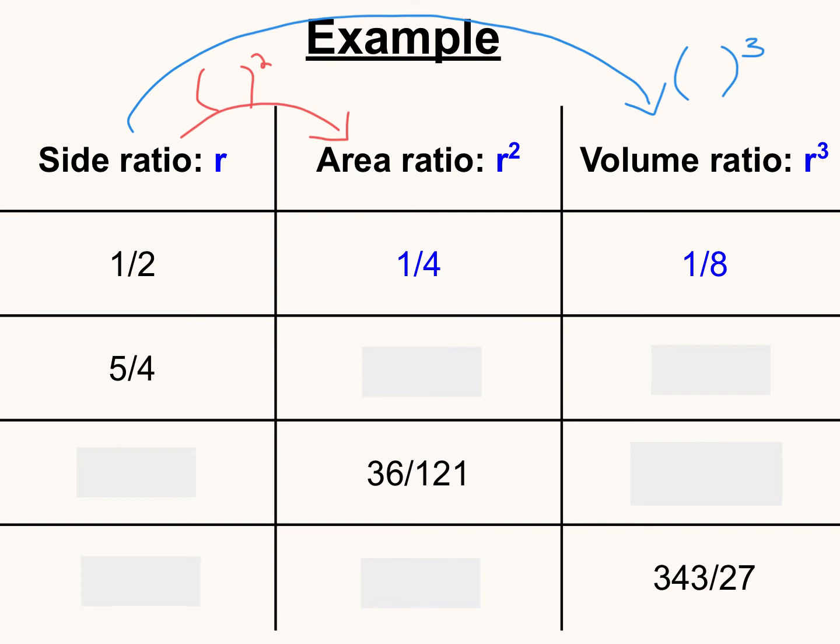Similarly, we can square five-fourths to get our area ratio of 25 over 16. And we can cube five-fourths, in other words, raising it to the third power, to get 125 over 64.